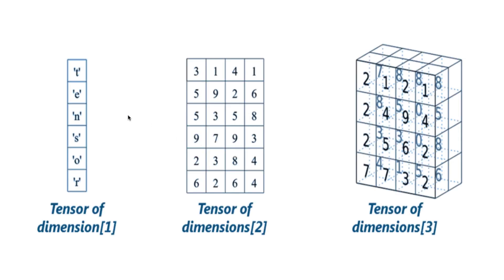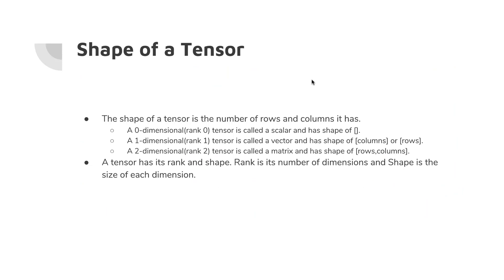The number of indices required to specify an element in a tensor is known as the rank of that tensor. A tensor of dimension one needs just one index. A tensor of two dimensions has rows and columns, so you require two indices. A tensor of dimension three requires three indices to identify an element.